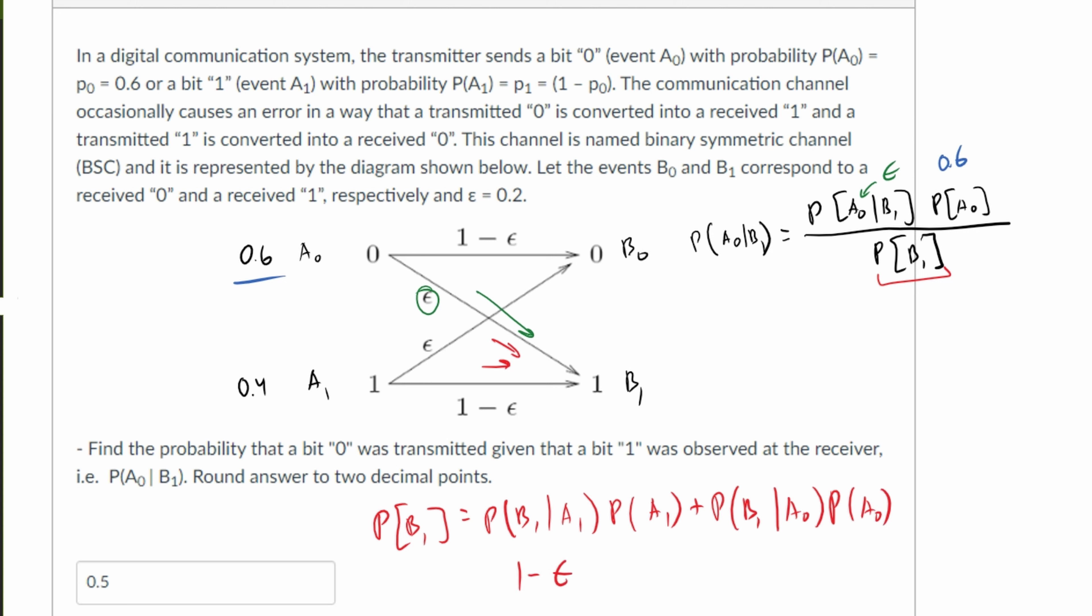So in here we're essentially going to have 1 minus that ε, and then we have this all multiplied by 0.4 plus ε times 0.6.